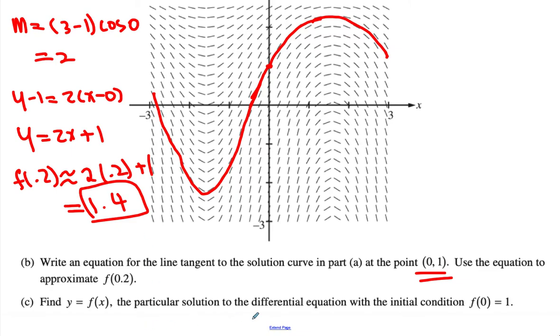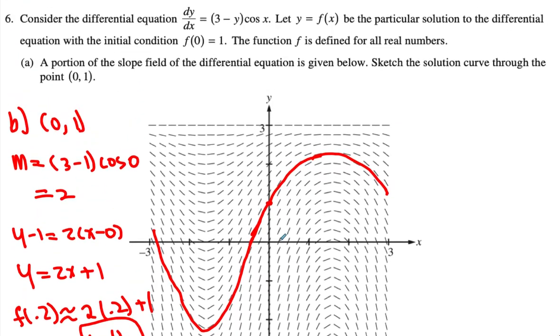I want you to find the particular solution here. For part C, first what I need to do is separate them. So 3 minus y goes under dy, and then dx goes on the other side. We get dy over (3 minus y) equals cosine of x dx. Once you're done with that, I integrate both sides.